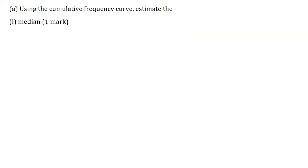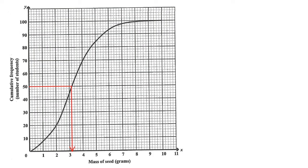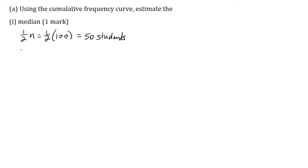Part A, Part 1: estimate the median for one mark. The median mass corresponds to half of the total frequency, so half n. Here n is the total frequency which is 100, so half of 100 is equal to 50 students. I'm going to go to the cumulative frequency curve and use graphical interpolation. We go to 50 students on the y-axis, move across the cumulative frequency curve, and read off the corresponding value on the x-axis. So the median mass, Q2, is equal to 3.2 grams.